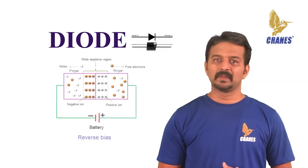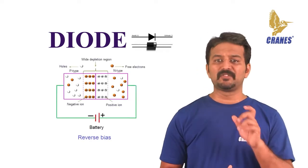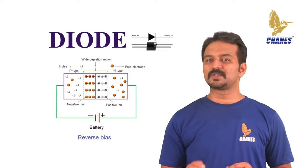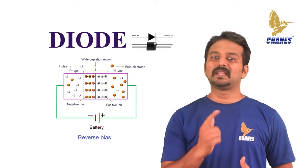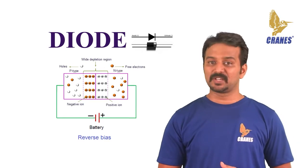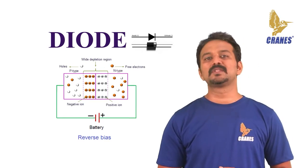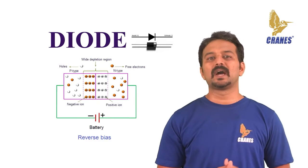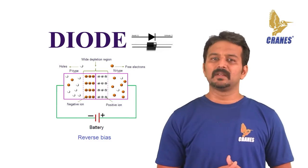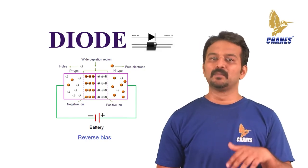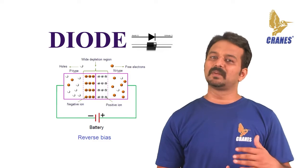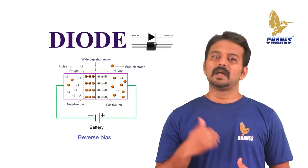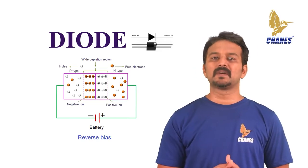Now let us look at the reverse biased diode. When the negative terminal of the voltage source is connected to the p-side and the positive terminal to the n-type side, the holes in the p-type region shift more away from the junction due to electrostatic attraction, leaving more uncovered negative ions at the junction. Similarly, the free electrons in the n-type region shift away from the junction toward the positive terminal, leaving more uncovered positive ions at the junction. As a result, the depletion region becomes wider.